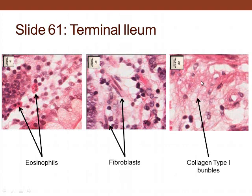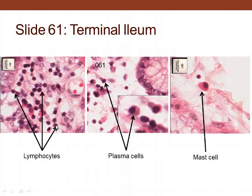Here we see large collagen bundles in the extracellular matrix. We also see lymphocytes — small cells with a mostly spherical nucleus. Plasma cells have more cytoplasm associated with them, and the chromatin in the nucleus takes on a clock-face or cartwheel-spoke appearance. Mast cells, unlike eosinophils, have a large, non-lobulated nucleus.